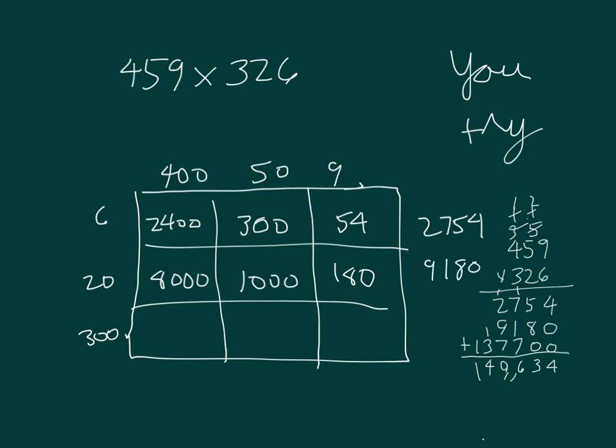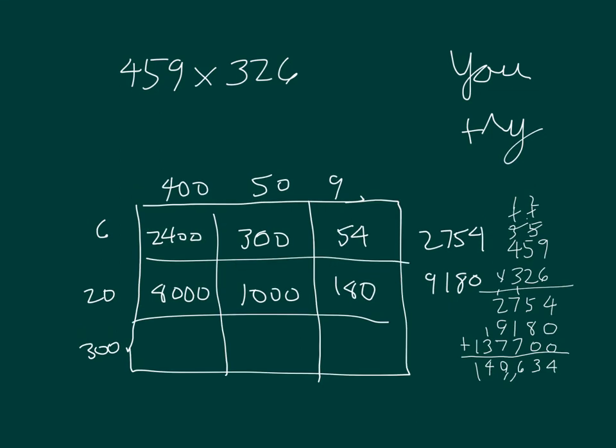And finally 400 times 300 which is 120,000. 300 times 50 which is 15,000. And then 300 times 9 which is 2,700. Adding those together you get 137,700.